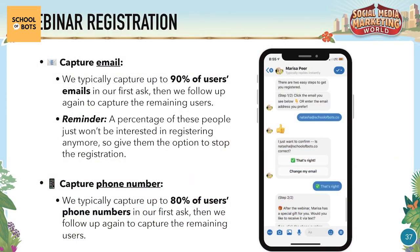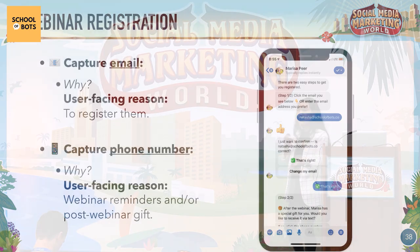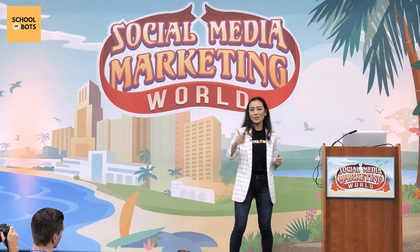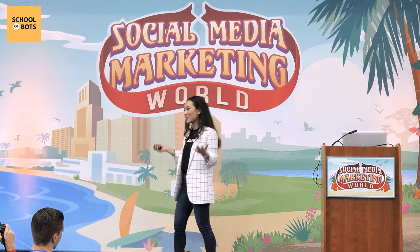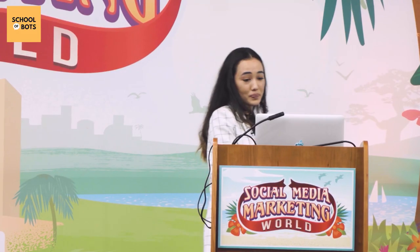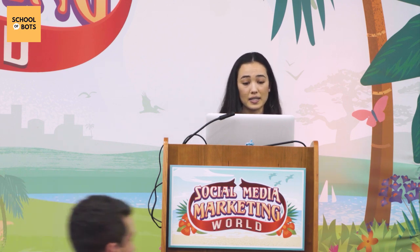For phone numbers, we typically capture up to 80% on the first ask and follow up to capture the rest. We usually need an email to register them in a webinar platform, so that's the user-facing reason for email. For phone number, give people a clear reason — you don't want to be asking for information without explanation. I once went through a chatbot from a big influencer that asked about 20 questions in a row with no context, which creates a terrible experience. Setting expectations and explaining why you need information is critical.